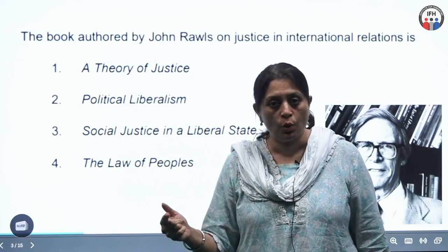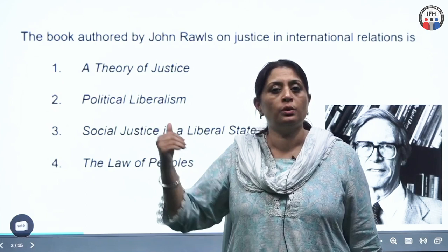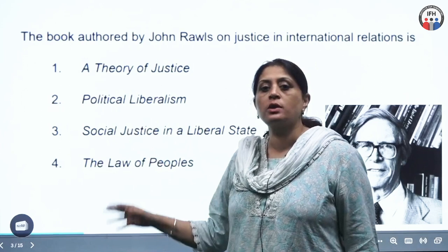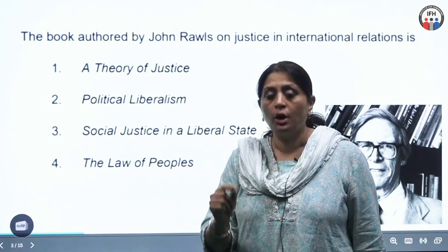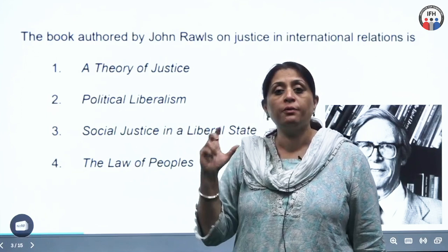In the first book, justice is presented as a comprehensive doctrine, but in Political Liberalism, Rawls says that people having different cultural backgrounds will develop an overlapping consensus on justice as fairness. He says it is not an ethical conception of justice but a political conception of justice. Social Justice in a Liberal State is not Rawls' book — it is Bruce Ackerman's book, and nobody would expect students to know that particular book, so you could have eliminated it.